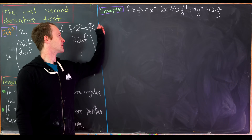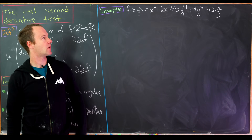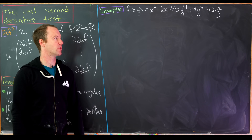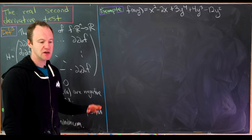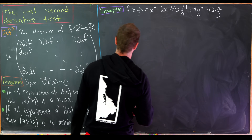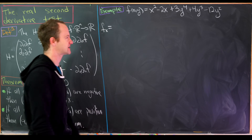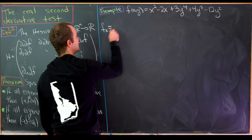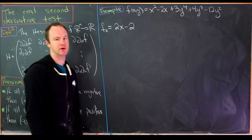Let's look at a fairly simple example. Consider f(x, y) = x² − 2x + 3y⁴ + 4y³ − 12y². We'll find the critical points by setting each first partial equal to zero — that's equivalent to setting the gradient equal to zero.